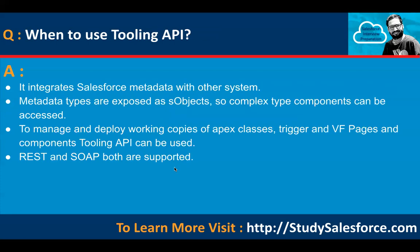When to use Tooling API: it integrates Salesforce metadata with other systems. Metadata types are exposed as sObjects, so complex type components can be accessed. It can be used to manage and deploy working copies of Apex classes, triggers, and Visualforce pages and components. Both REST and SOAP are supported.